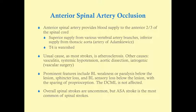The usual causes, as with most strokes, are atherosclerosis, hypertension, and diabetes mellitus. Other causes include vasculitis, hypotension, aortic dissection, and iatrogenic causes. Because blood supply comes from the thoracic aorta, vascular surgery — particularly aortic surgery — can result in anterior spinal artery stroke due to complications during the procedure.